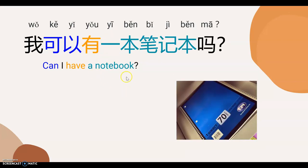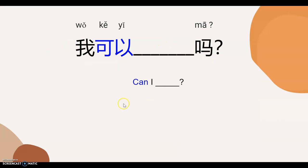A notebook. 一本笔记本。 So, 'Can I have a notebook?' 我可以有一本笔记本吗? Now it's your turn to say 'Can I have a notebook.' This is a useful sentence pattern — you just put the things in between. 我可以有 [something] 吗?